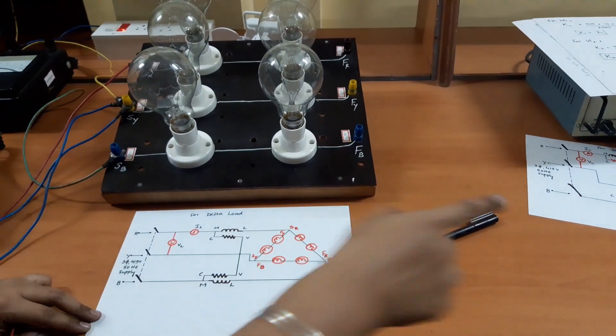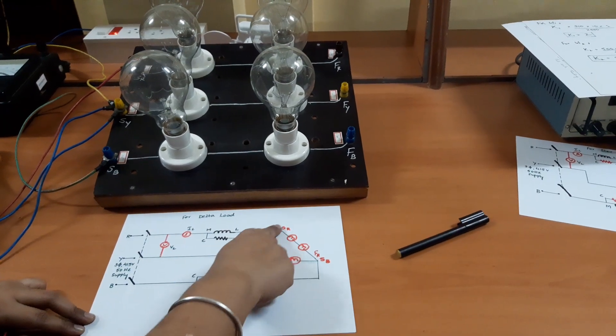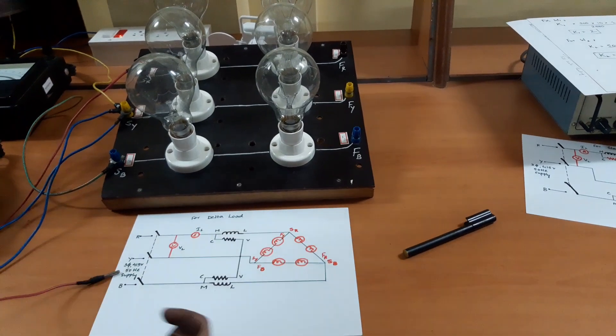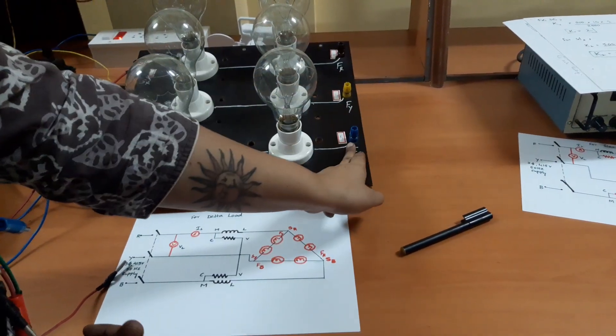Till here we are retaining the experiment as it was in the previous section, just manipulating the connections in this part. We have removed the star connection and now let us connect it in delta.